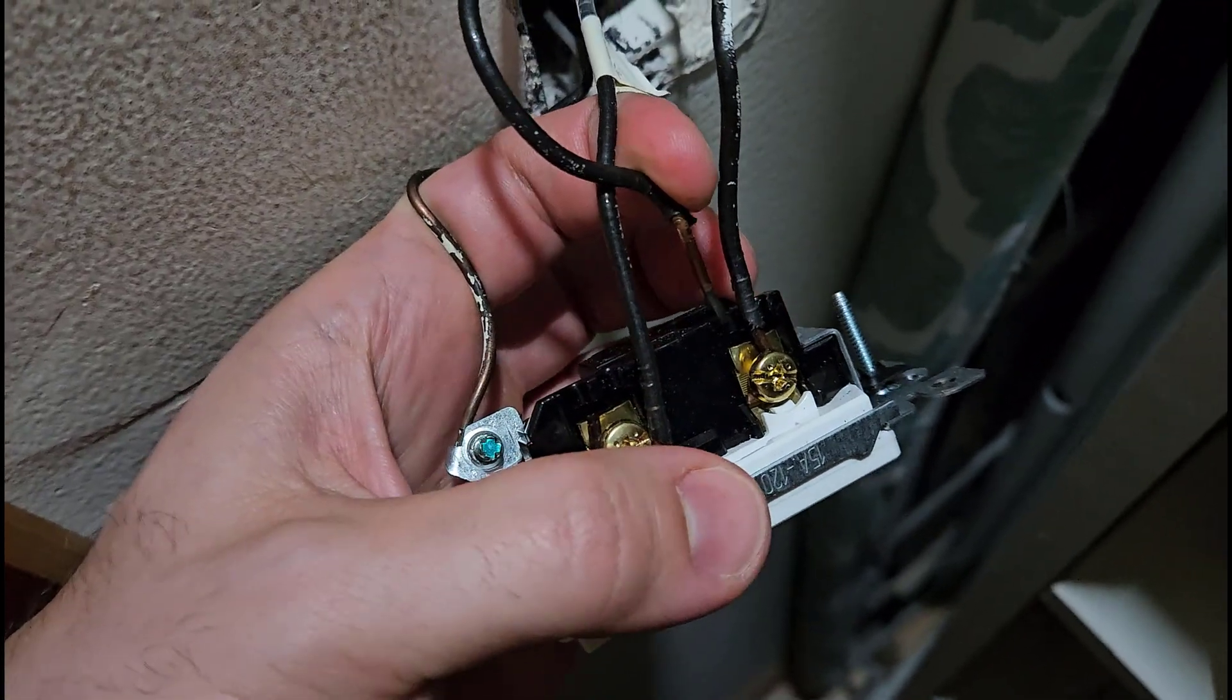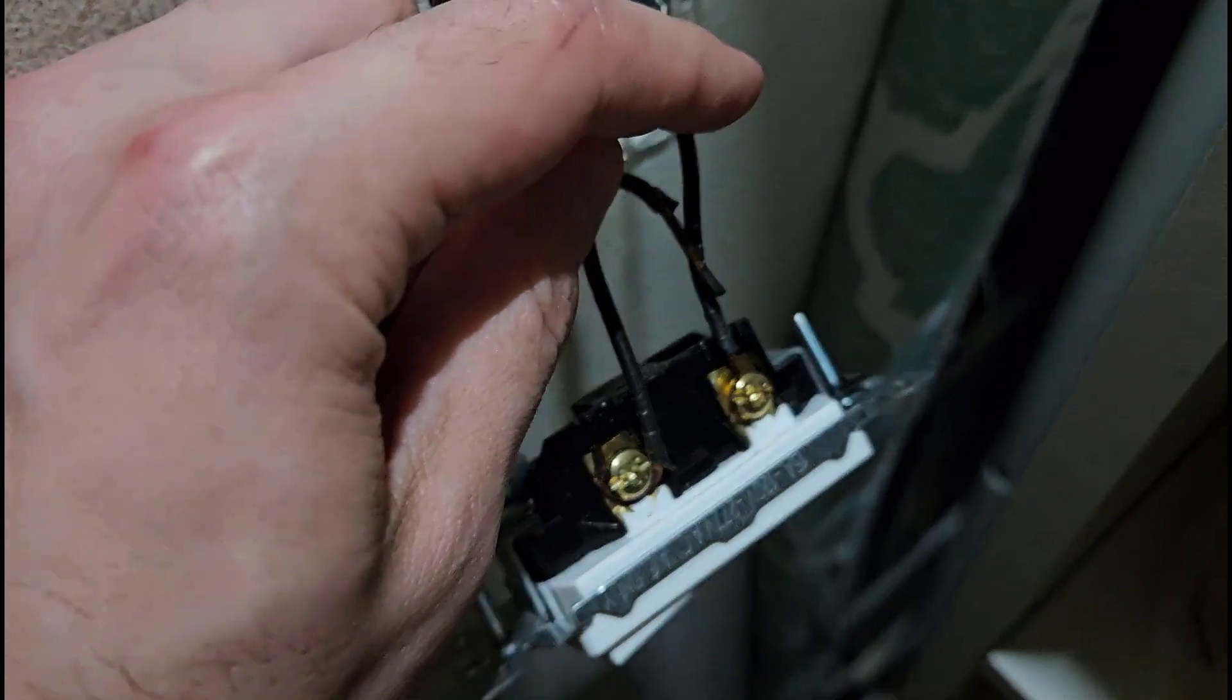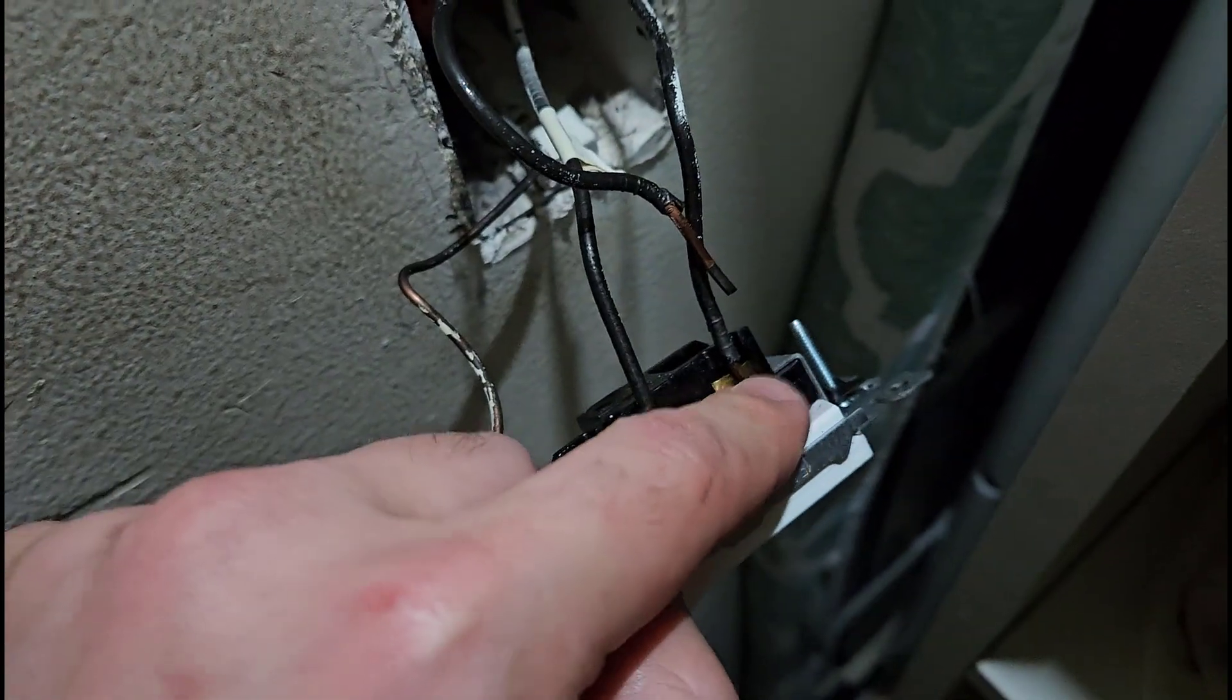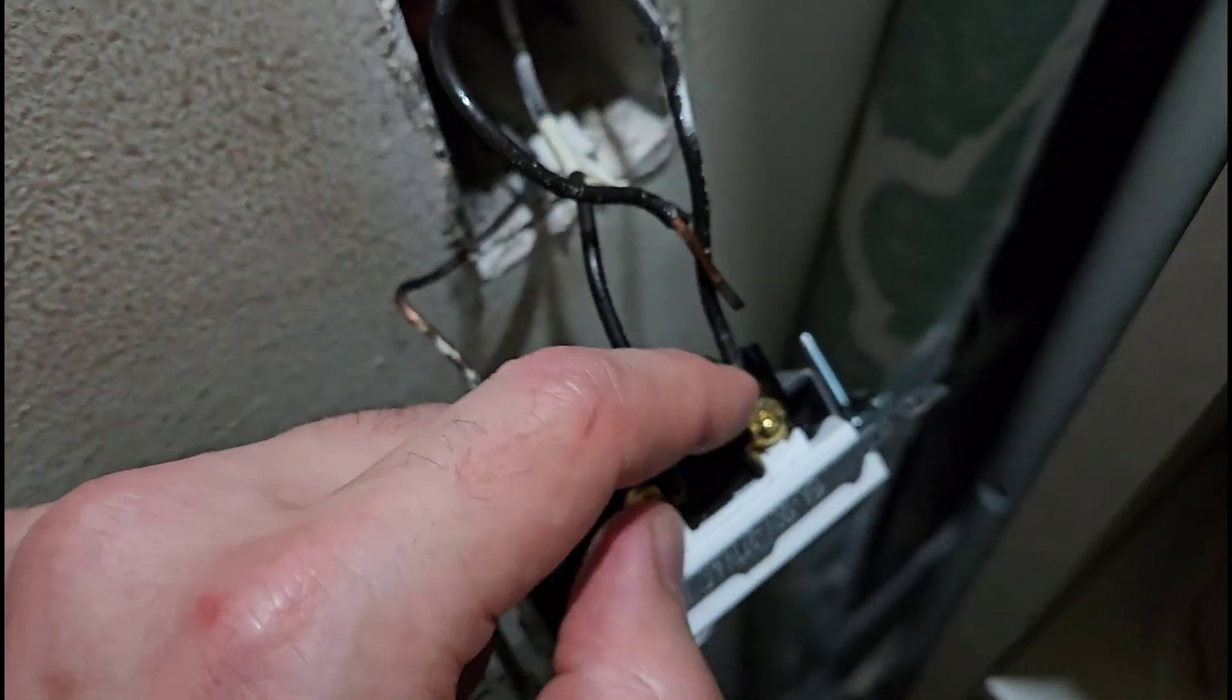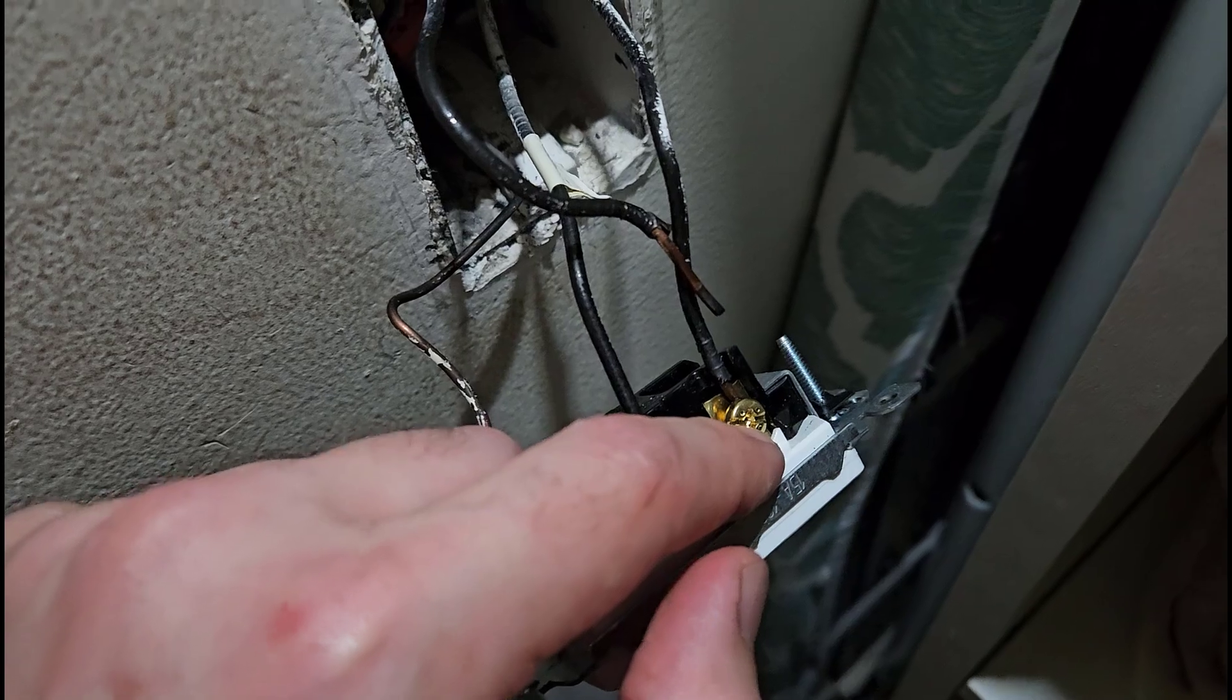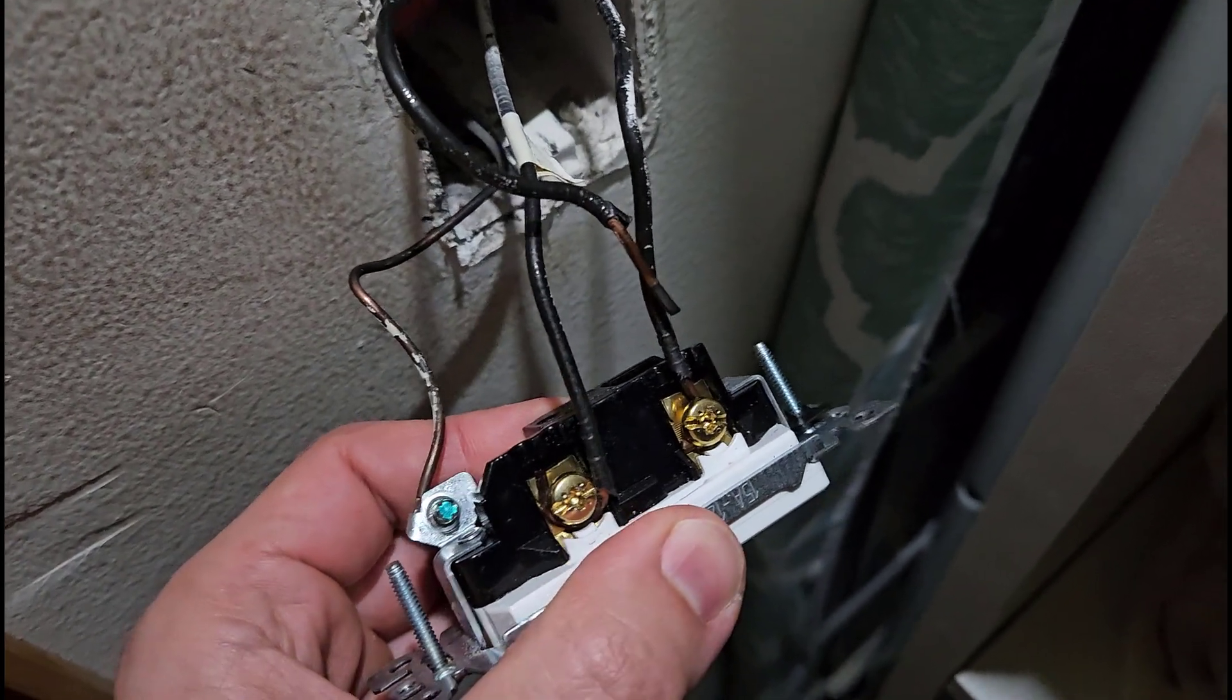So the proper way to do that is to use a wire nut separately to connect these two wires and then run a third wire to the screw, as opposed to trying to cram both wires into the screw or pushing one wire into the hole and one wire into the screw as it was previously. So we're going to redo that and show you the proper way to do it.